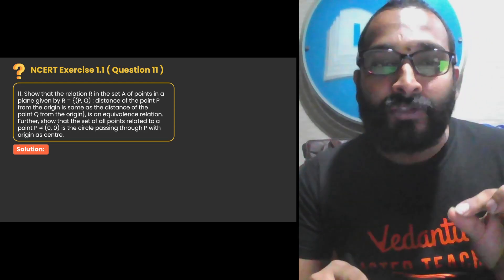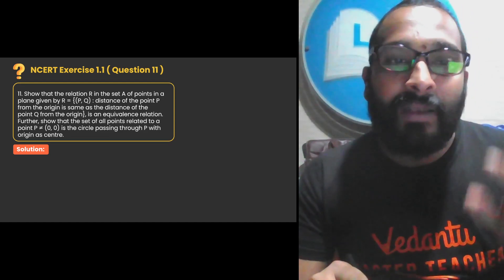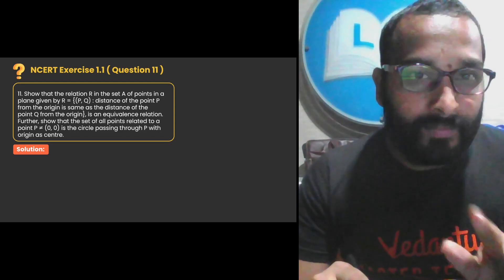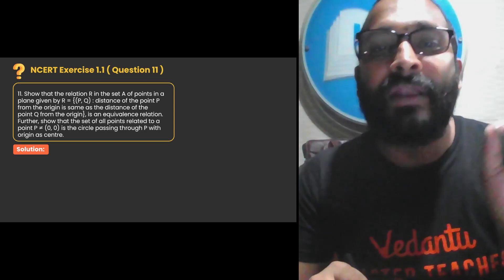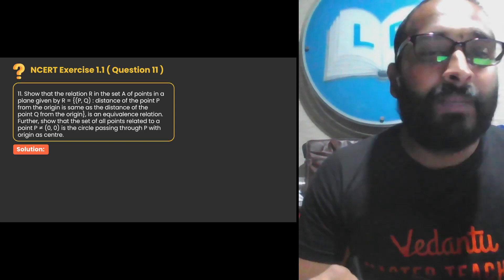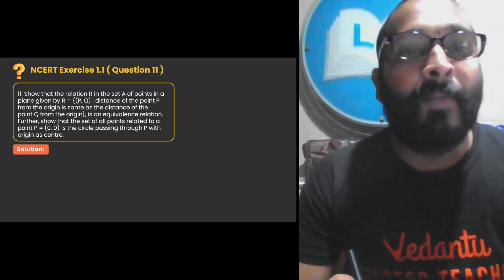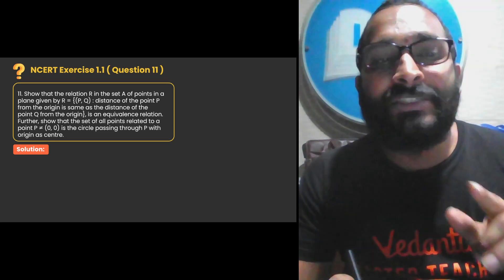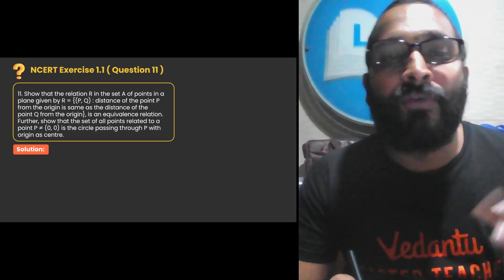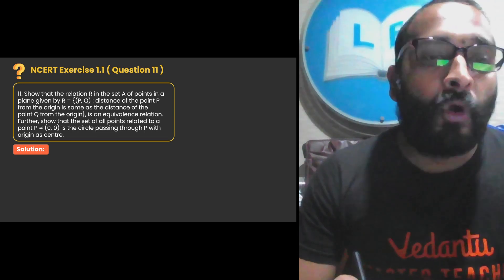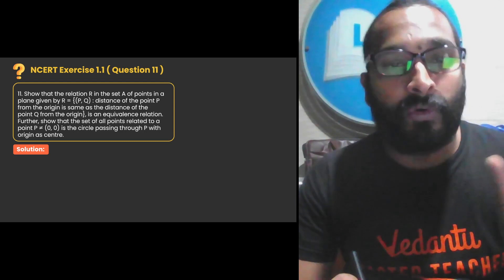Now let us try to understand how to prove this. They have told us to show that the relation R in the set A of points in a plane, given by P and Q, where the distance of point P from the origin is the same as the distance of point Q from the origin.